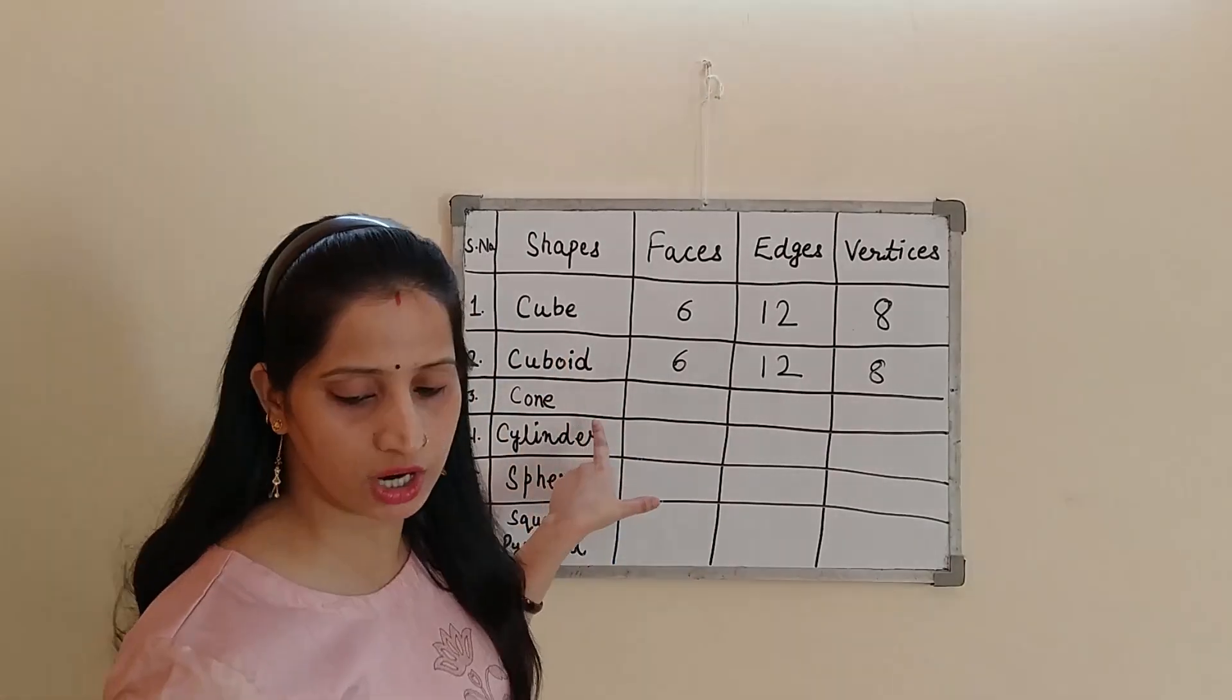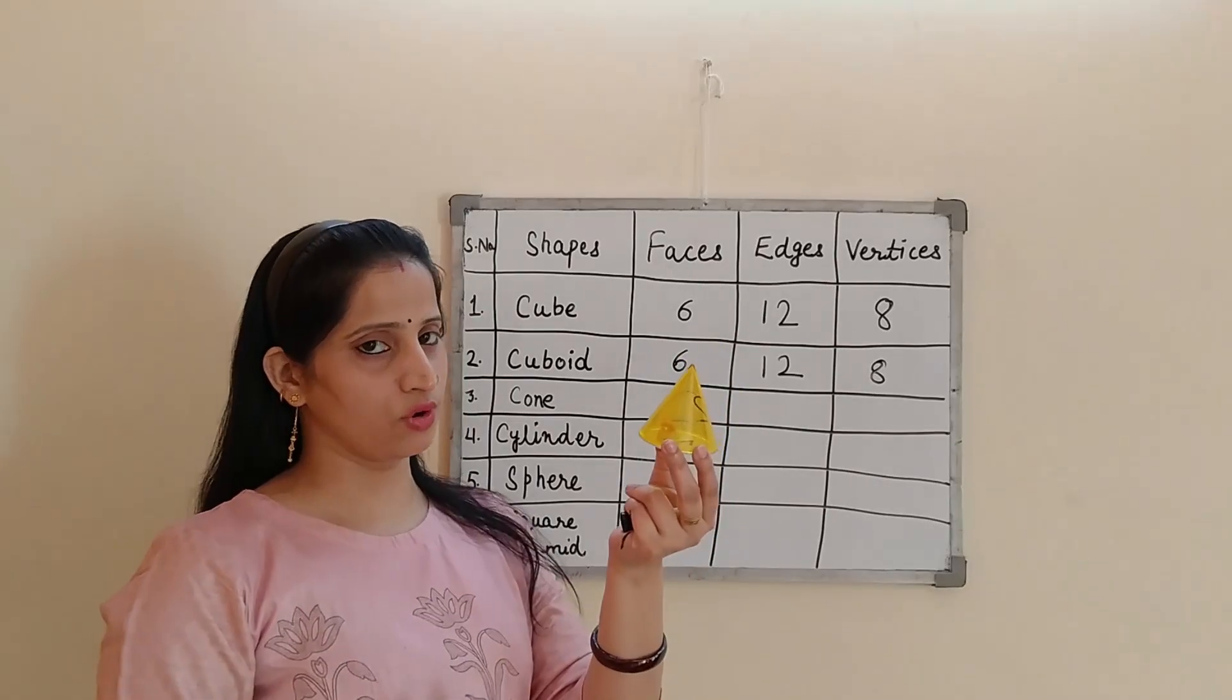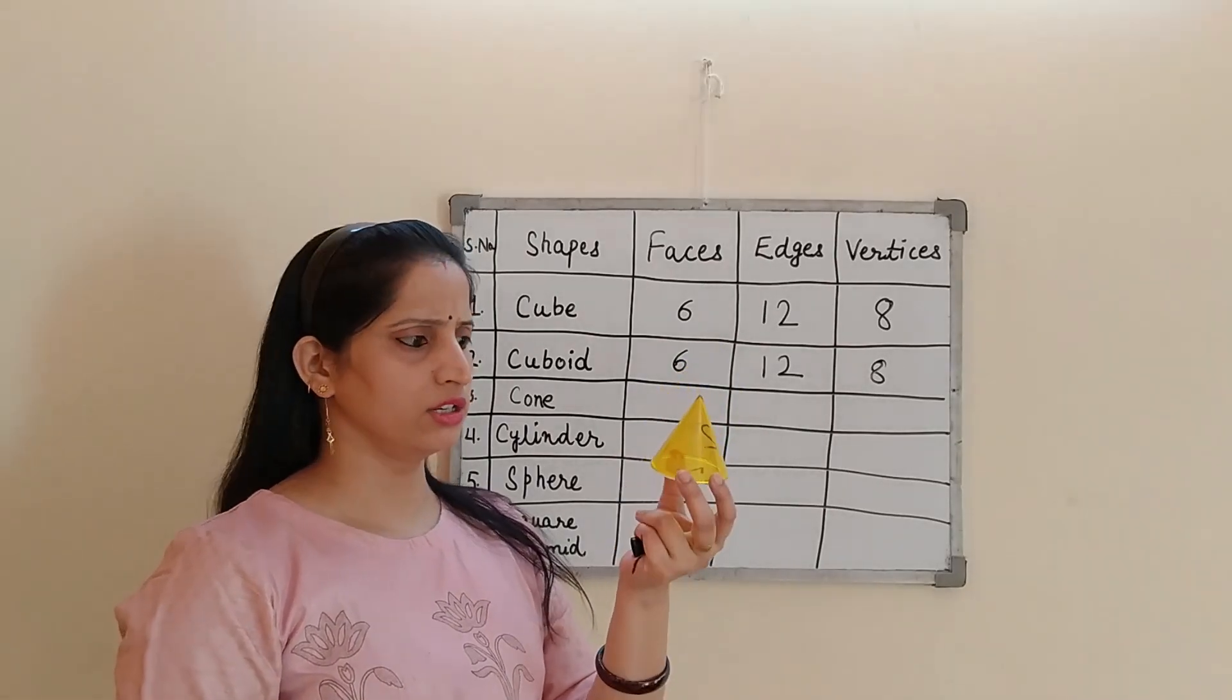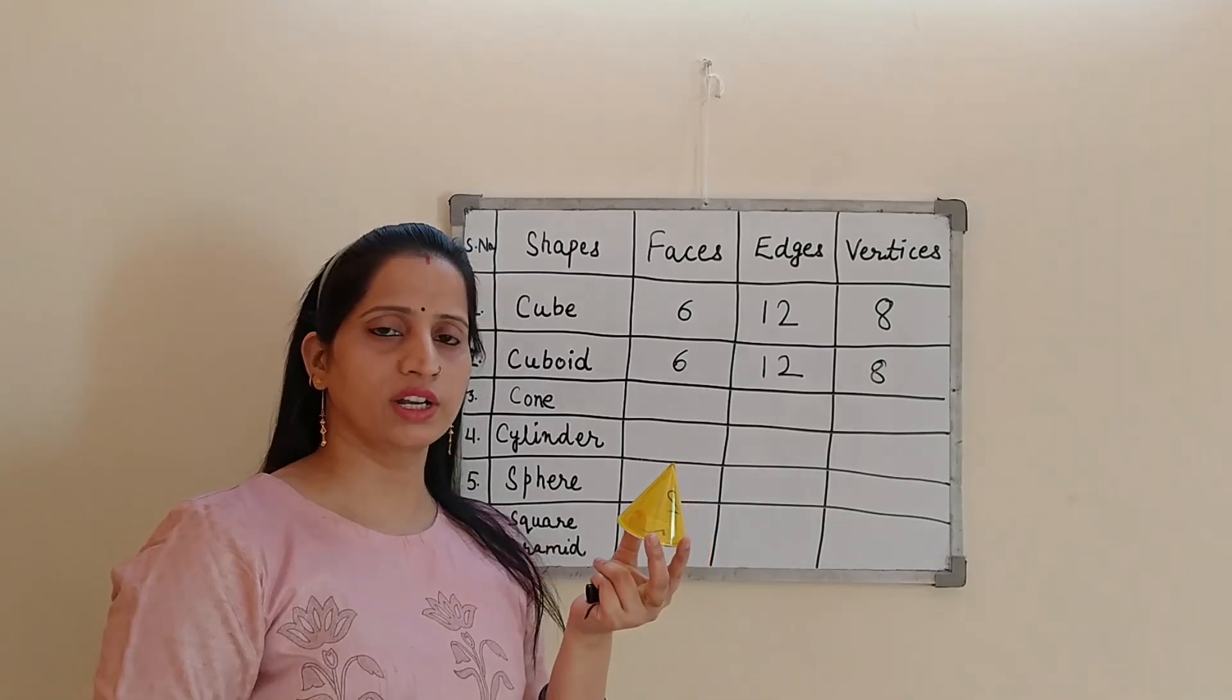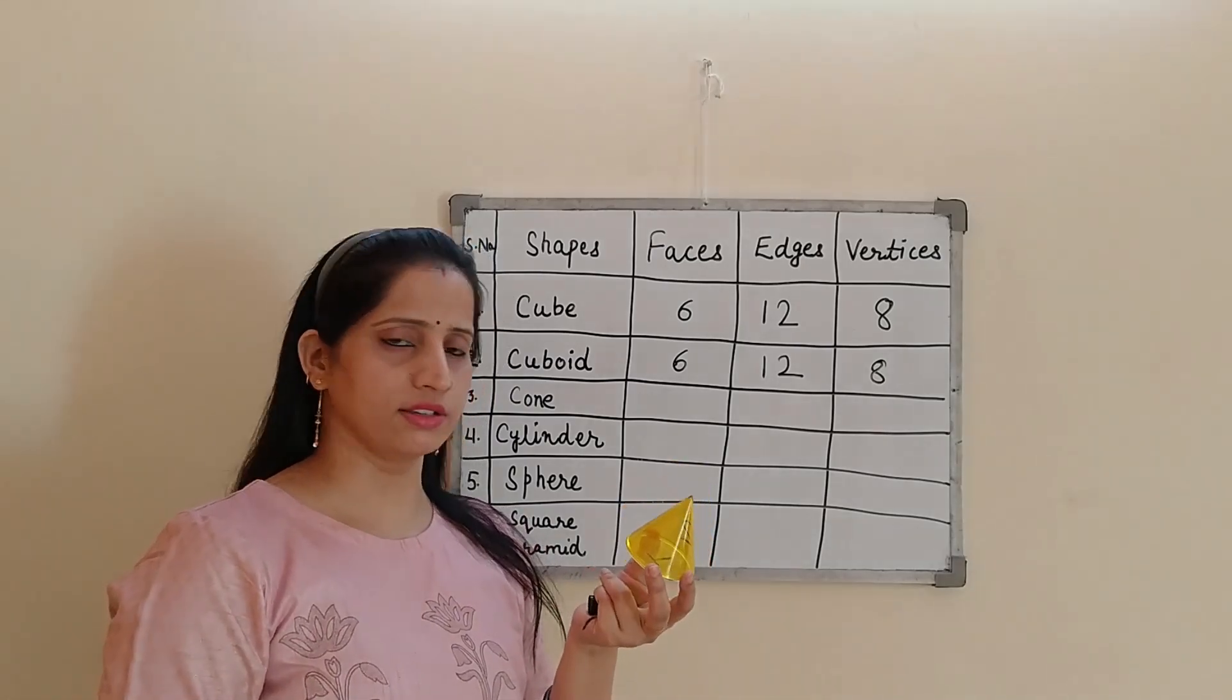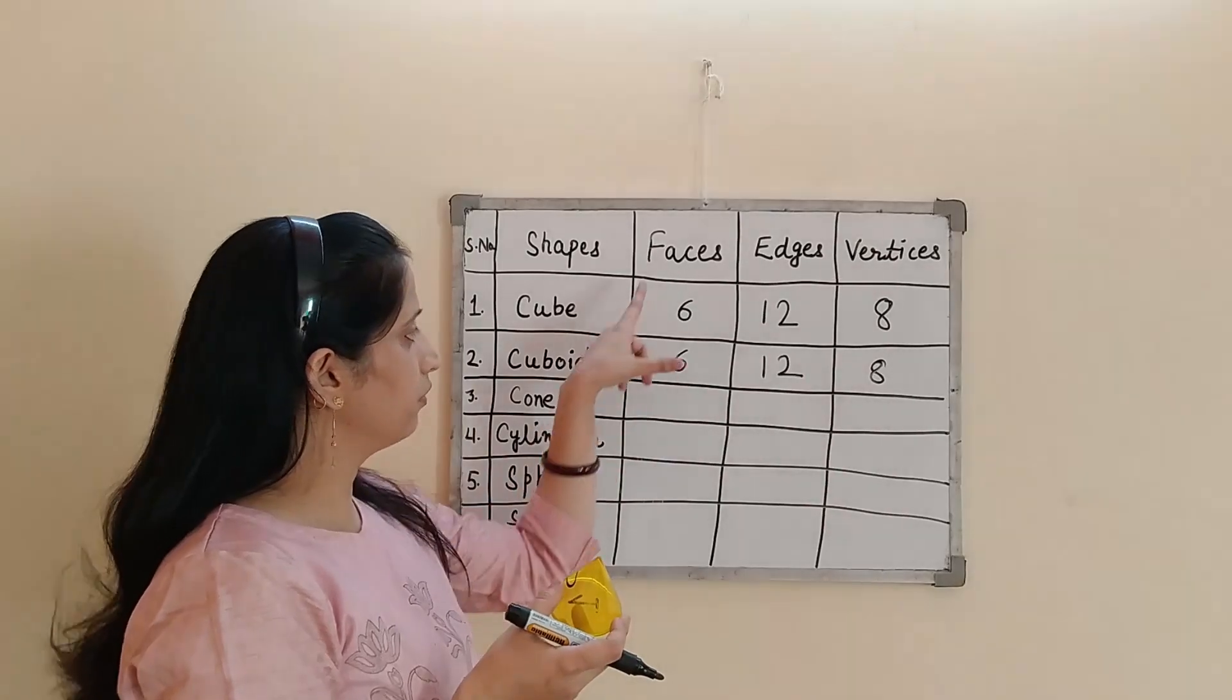Now, let's talk about the third shape that is cone. See, I have a little cone also in my hand. You can see various things like ice cream cone, you can take road caps, so many things that you can find at your home.